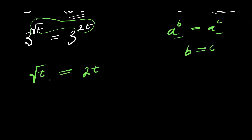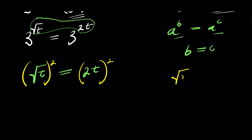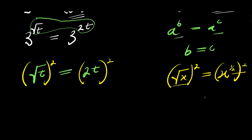Now solving for t, I can decide to take the squares of both sides of this equation. If you have square root of x raised to the power of 2, this is just like writing x to the power of 1 over 2, raised to the power of 2. Multiplying the exponents gives x to the power of 2 over 2, which is just x, because 2 over 2 is 1. So the square root and the square cancel each other.